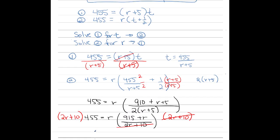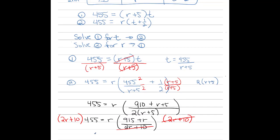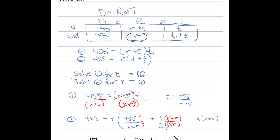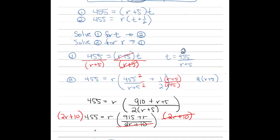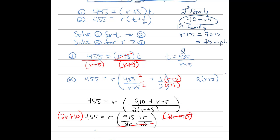So r, the rate of speed of the second family, is 70 miles per hour. The first family drove r + 5, which is 70 + 5 = 75 miles per hour. Those are the two speeds.